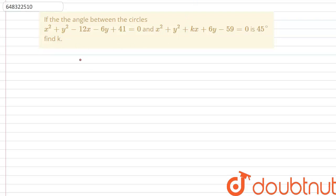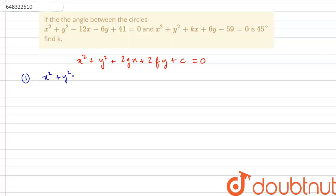So we compare it with the standard equation of a circle. The standard equation of a circle is x² + y² + 2gx + 2fy + c = 0. The first equation we have for the circle is x² + y² − 12x − 6y + 41 = 0.